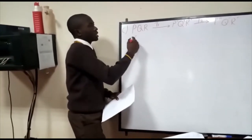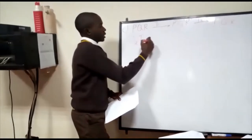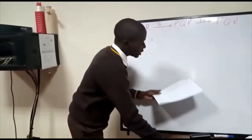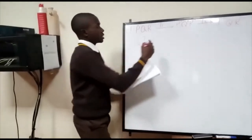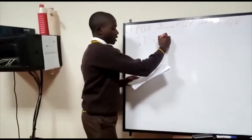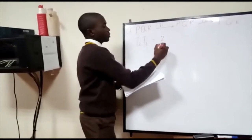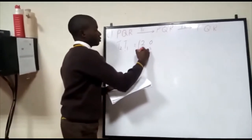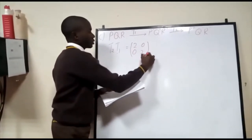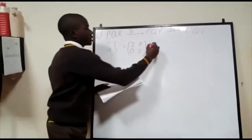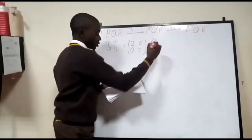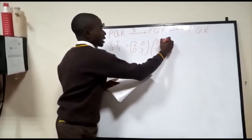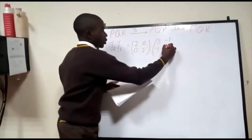We pre-multiply T2 with T1. Our T2 was the matrix [2, 0; 0, 2] and our T1 was the matrix [0, -1; -1, 0].